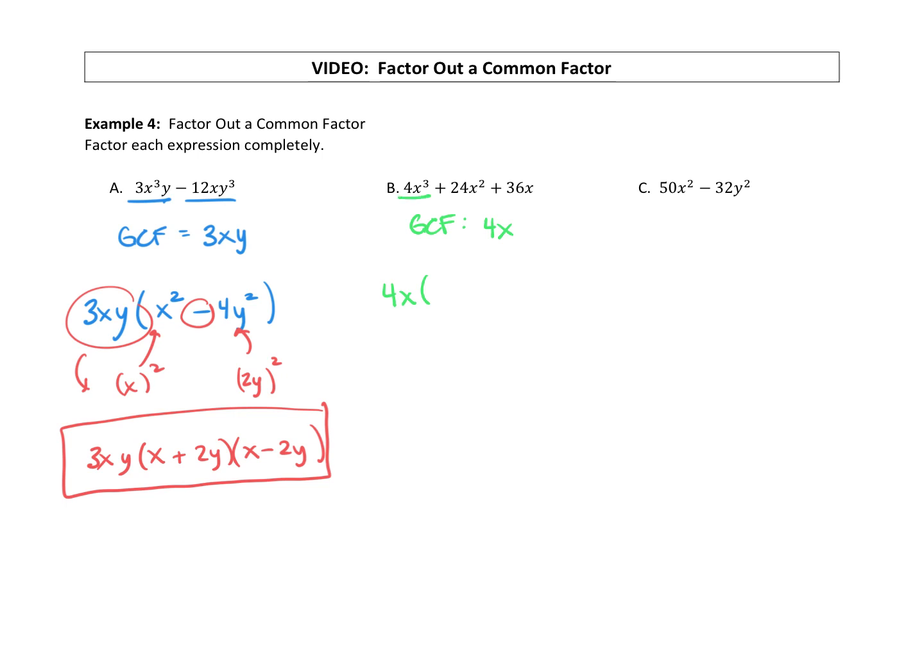So we're going to factor a 4x out of each term. You take a 4x out of 4x cubed, leaves you with x squared. Factor a 4x out of 24x squared, leaves you with 6x. And then if you factor a 4x out of 36x, leaves you with a positive 9. So we did our GCF factoring.